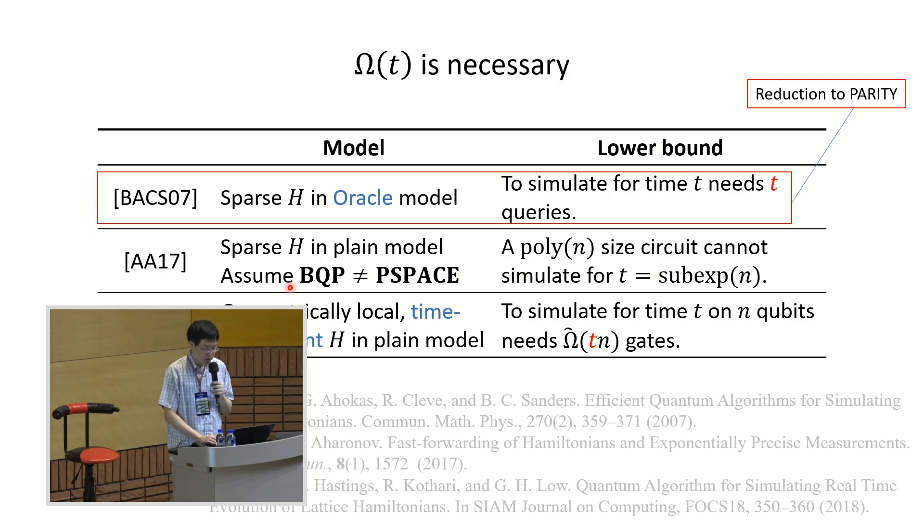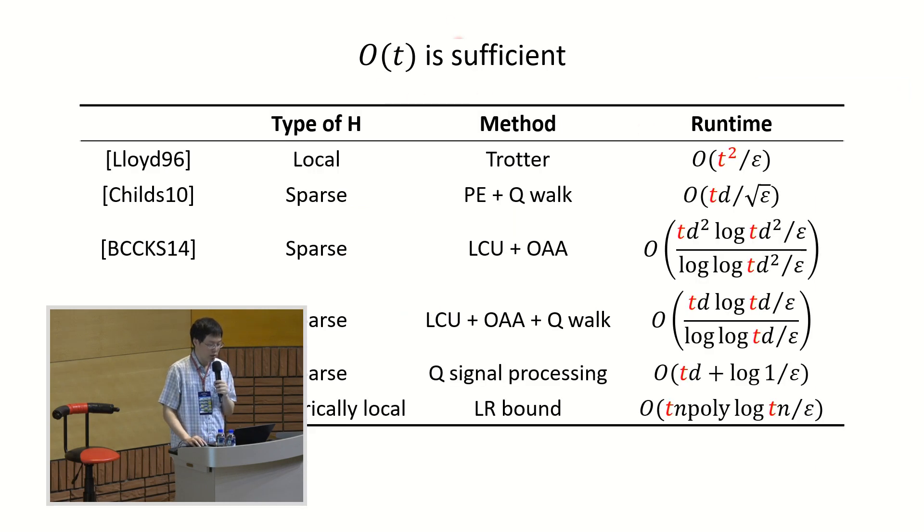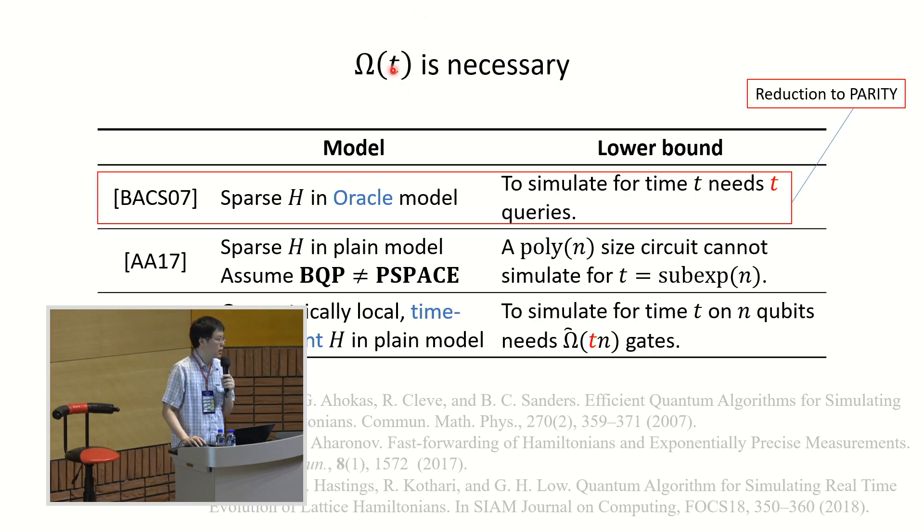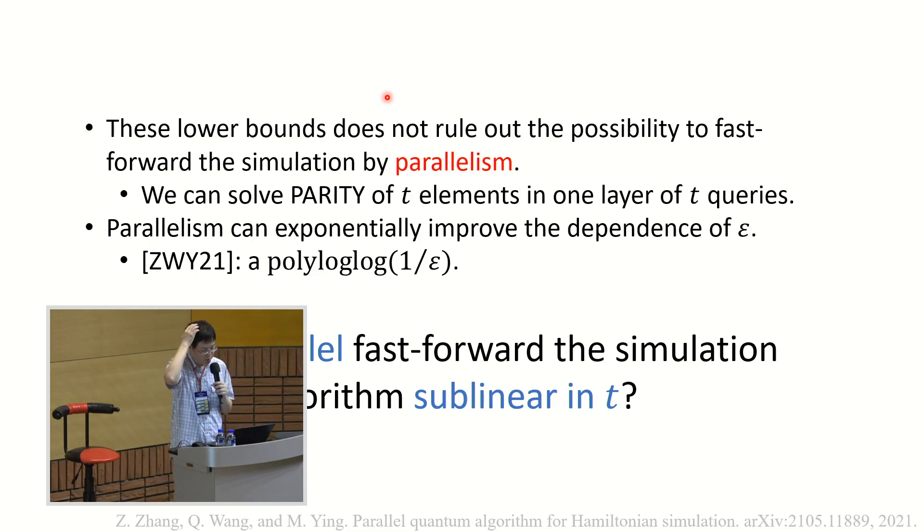And so this is kind of the end of the story if you just think about the time dependence of Hamiltonian simulation. So we have O(T) upper bound, and we have omega T lower bound. And so we have matching upper bound and lower bound, and kind of there is no gap between them and our job is done. And so now we kind of change our problem a little bit.